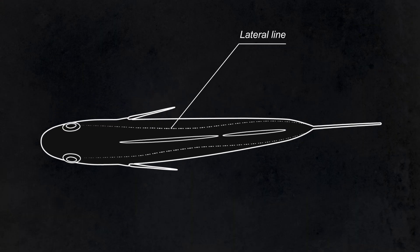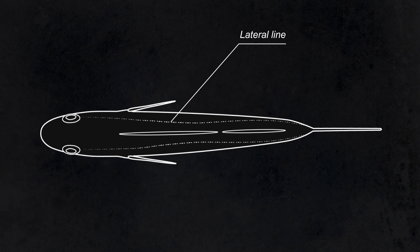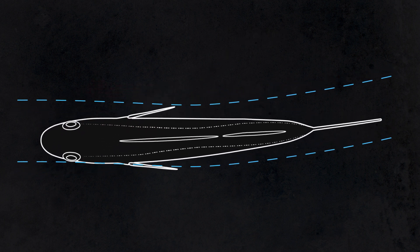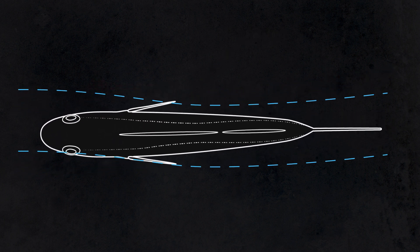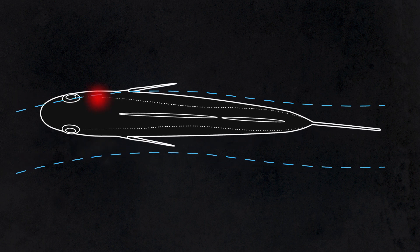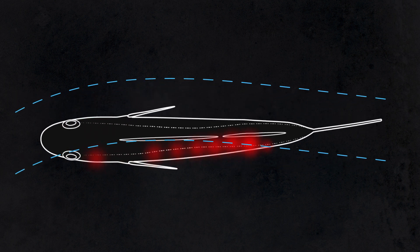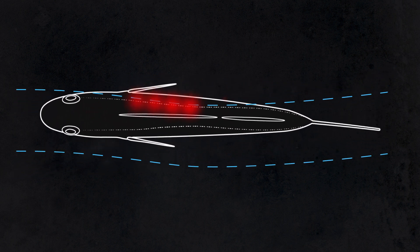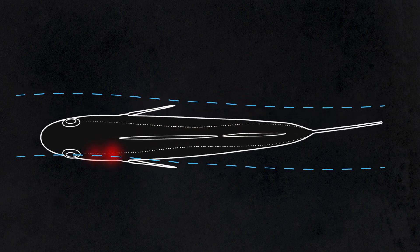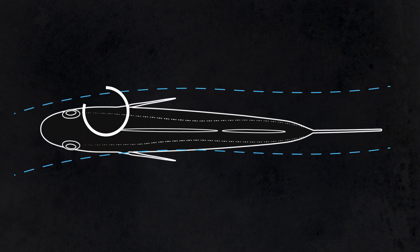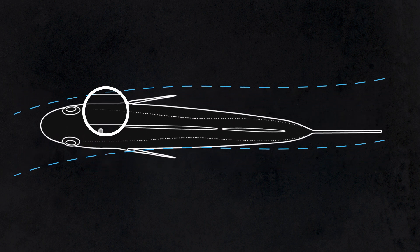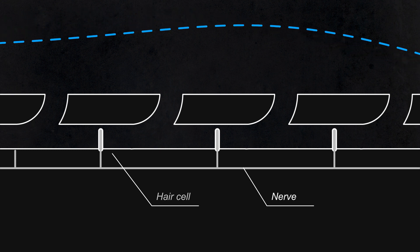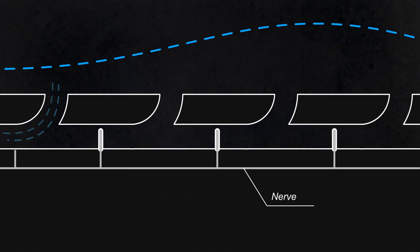The lateral line is made up of connected tubes with holes open to the water the fish is swimming in. As a fish, prey, or even a water current moves over one of the lateral line holes, it changes the pressure at that hole. When the pressure changes, the water in it will either have to move in or out.